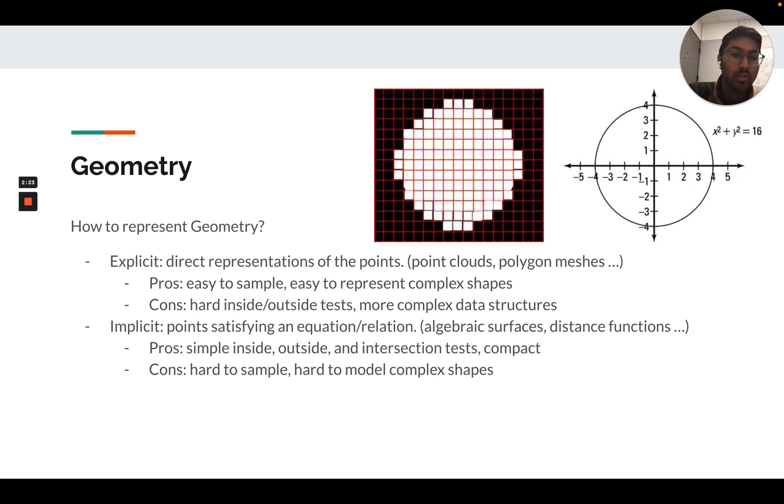These could be algebraic surfaces, signed distance functions or unsigned distance functions telling you the distance to the surface. It's really easy for some of these representations to test whether a point is inside or outside of the shape. It can be easy to do intersection tests. They can be compact representations of the surface, but they can be hard to sample and sometimes difficult to represent complex shapes, though progress is being made on the research front there.